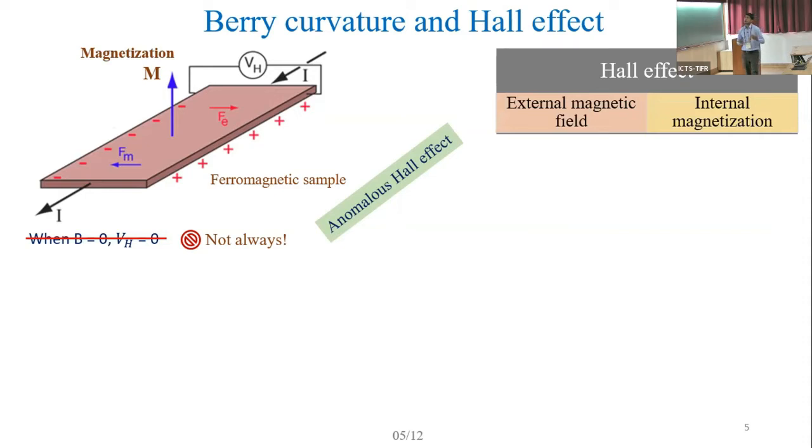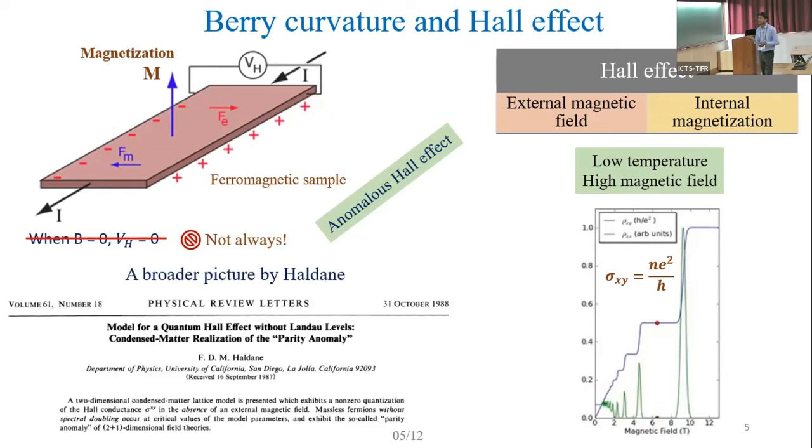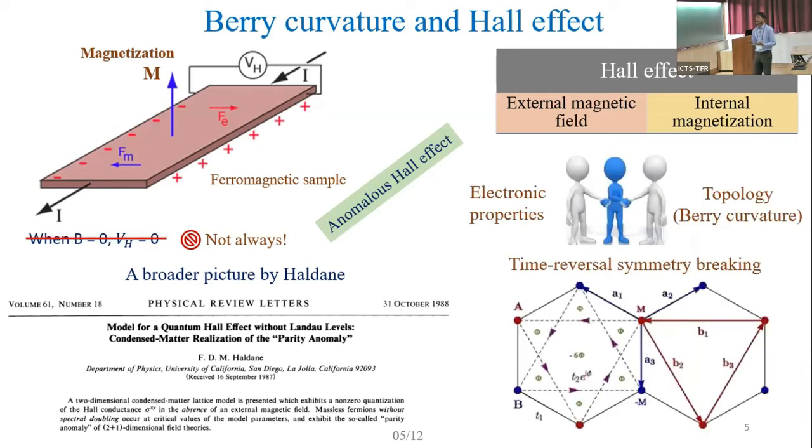What is more exciting is that when we consider high mobility samples in the low temperature region with high magnetic field, we get plateaus in the transverse conductivity. In order to explain these flat regions, Haldane first introduced his model where he broke the time reversal symmetry and showed that this is enough to explain the quantum anomalous Hall effect. This is when we can relate the concept of electronic properties with our concept of topology, for example, Berry curvature in the system.